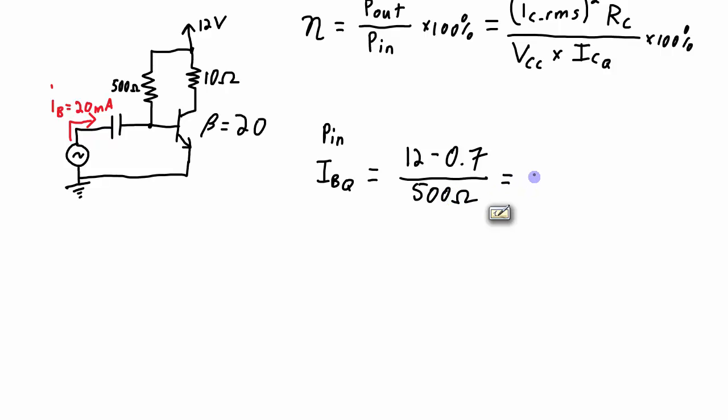And that gives a base current of 22.6 milliamps. The collector current is simply going to be beta times IBQ. Beta in this case is 20 times the 22.6 milliamps, which gives me a collector current of 0.452 amps.